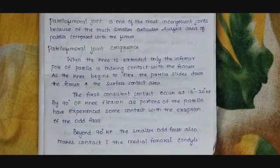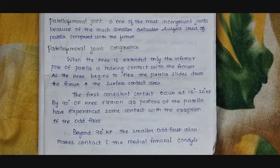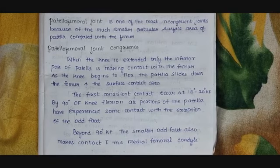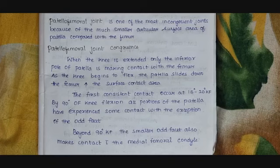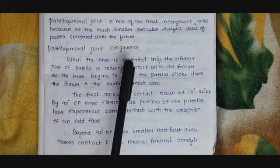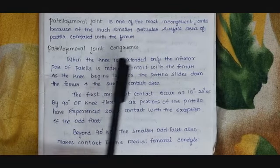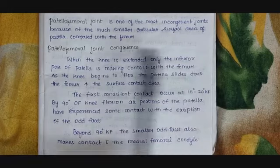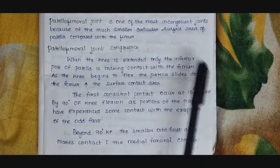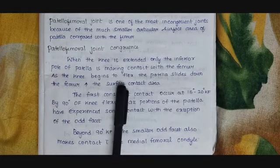The patellofemoral joint is said to be more stable when the knee is in flexion and less stable when the knee is in extension. Because when the knee is in extension, the contact area between the patella and the femoral sulcus is very much lesser. The patellofemoral instability is more in knee extension when compared to knee flexion. When the knee is extended, only the inferior pole of the patella is making contact with the femur. As the knee begins to flex, the patella slides down the femur, increasing the surface contact area.